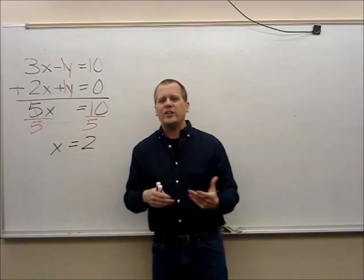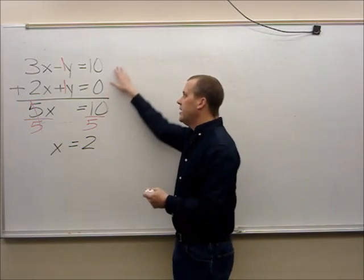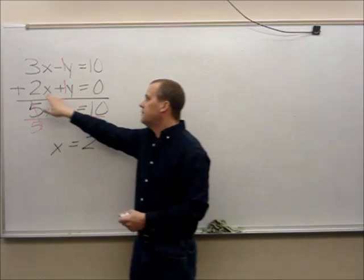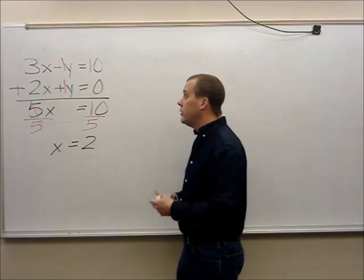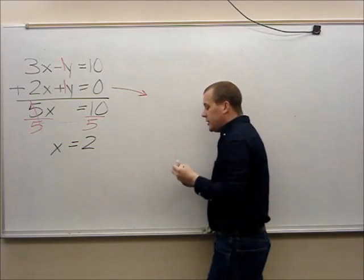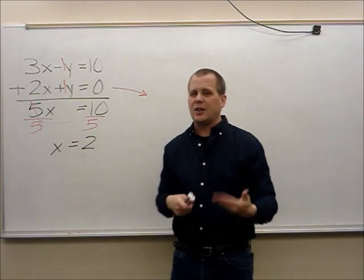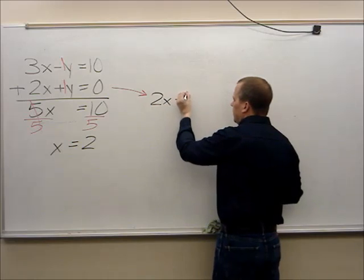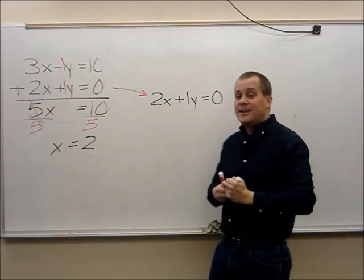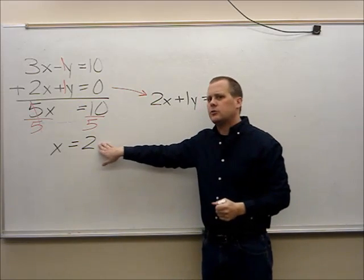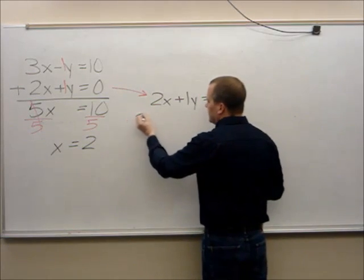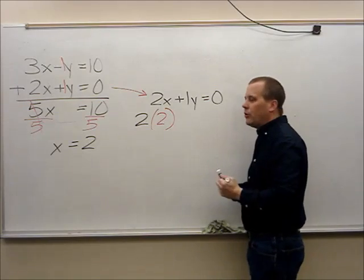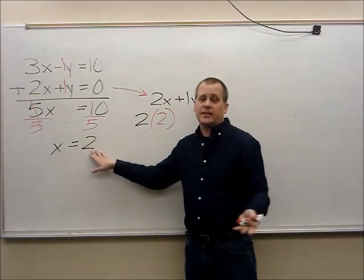Now I need to ask myself, which equation looks easier to work with — the top equation or the bottom equation? What I need to do is substitute this answer in for one of my x values. I'm going to select the second equation, because the numbers are a little bit smaller and easier to work with. I've got 2x plus 1y is equal to 0, and now I'm going to substitute my answer — x equals 2 — so instead of x, I'm going to replace it with 2.